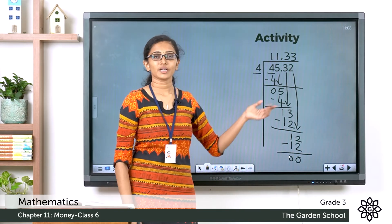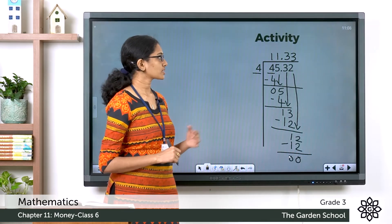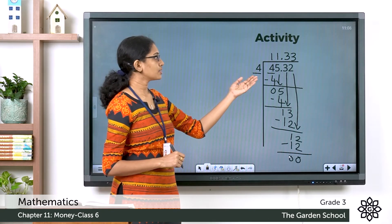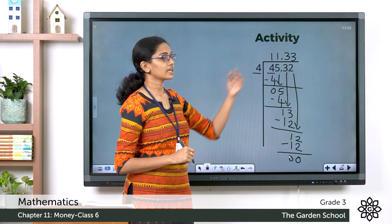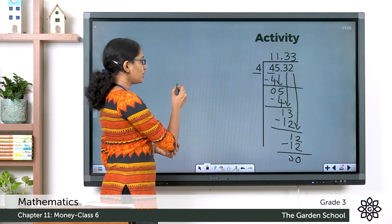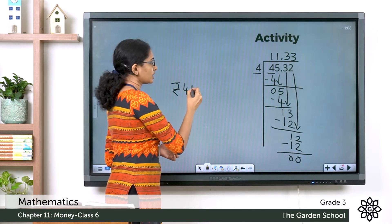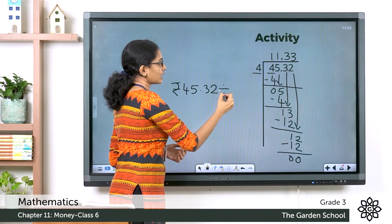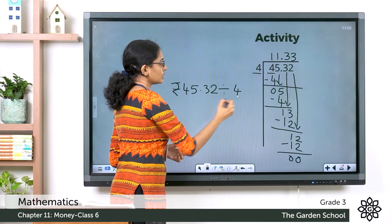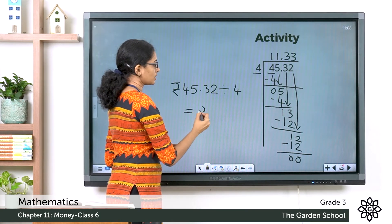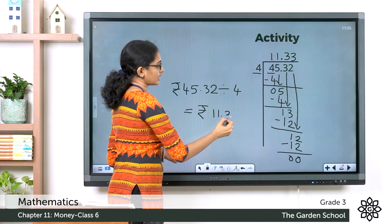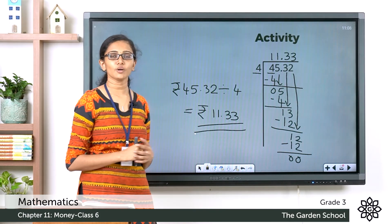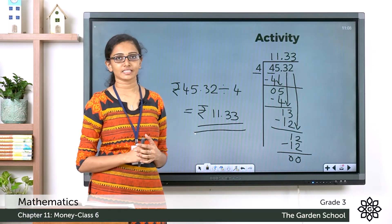So right now we are done with the division. What is the quotient? We got the quotient 11 rupee 33 paise. So the amount 45 rupee 32 paise when divided by 4 gives you the amount 11 rupee 33 paise. I hope you got this answer correctly.